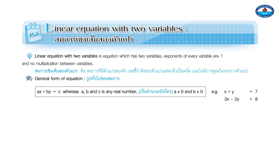The General Form of the equation is Ax plus By equals C, whereas A, B, and C are any real numbers. A does not equal zero, and B does not equal zero. Examples: x plus y equals 7; 3x minus 2y equals 8.